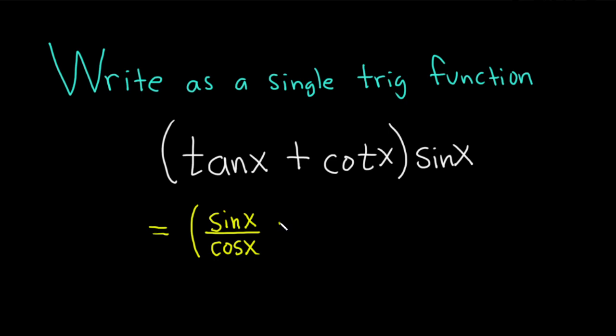plus, and then cotangent is cosine over sine x. And then here we have the sine of x.